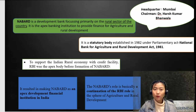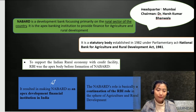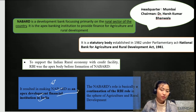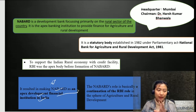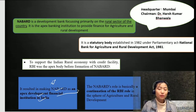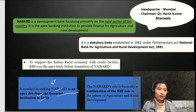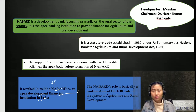RBI was the apex body before the formation of NABARD, which led to the formation of NABARD. NABARD became the Apex Development Financial Institution of India, and NABARD's role is basically the continuation of RBI's role, but mainly in the sphere of agriculture and rural development. It is mostly responsible for the formation of cottage industry and rural programs and projects.